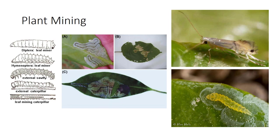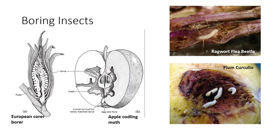Leaf miners can cause economic damage by attacking the foliage of fruit trees, vegetables, ornamental plants, and forest trees. The citrus leaf miner has spread around the world. The adult is kind of cute, but you never see that — not even the larvae. Normally just the aftermath.